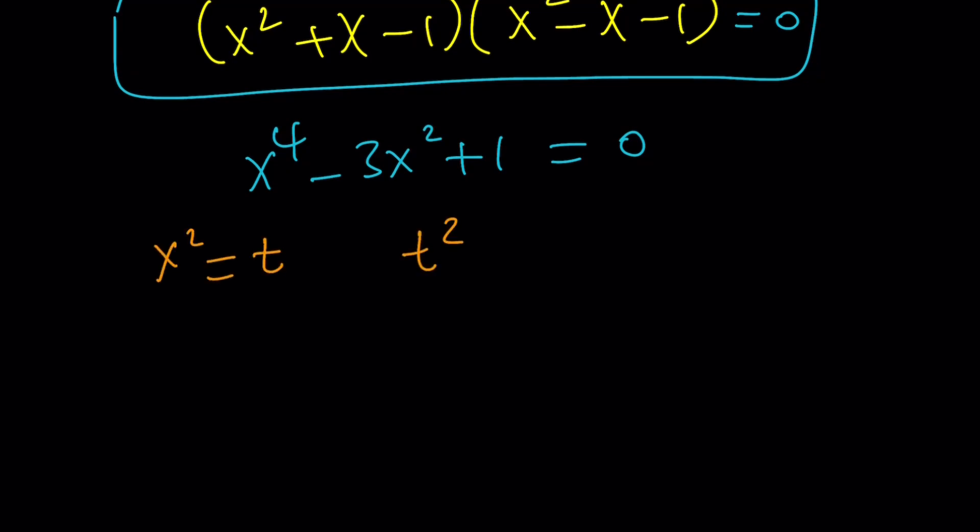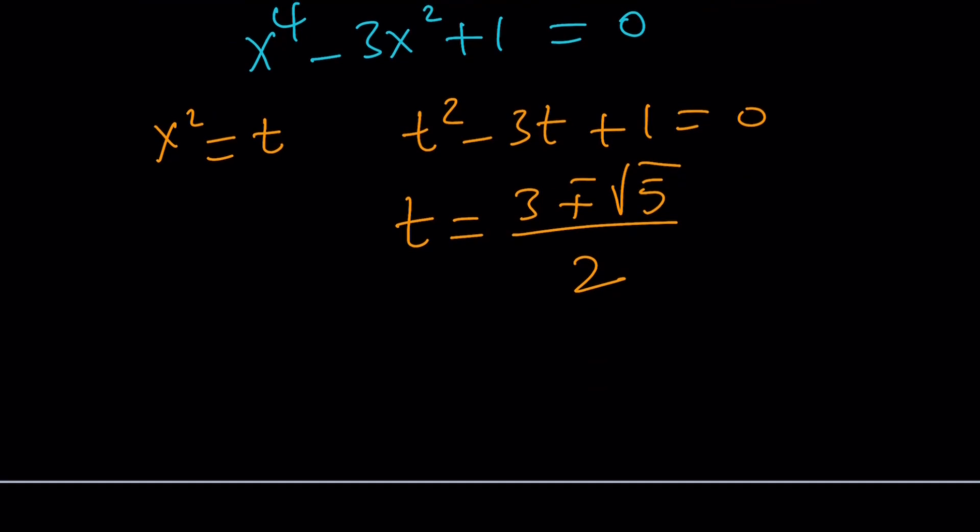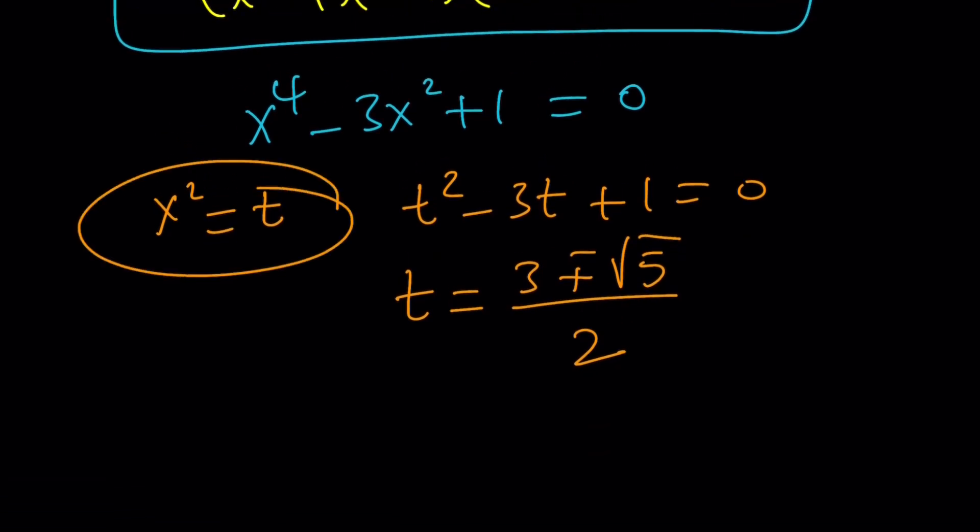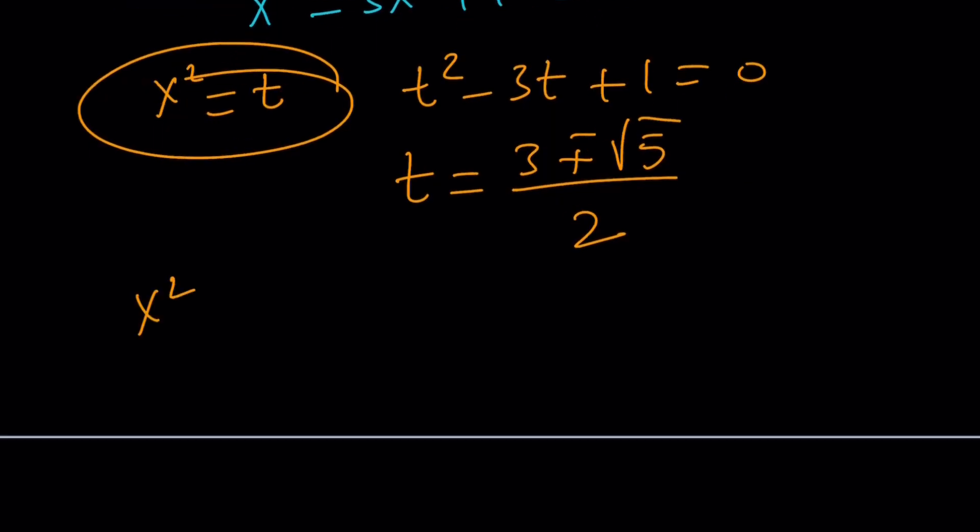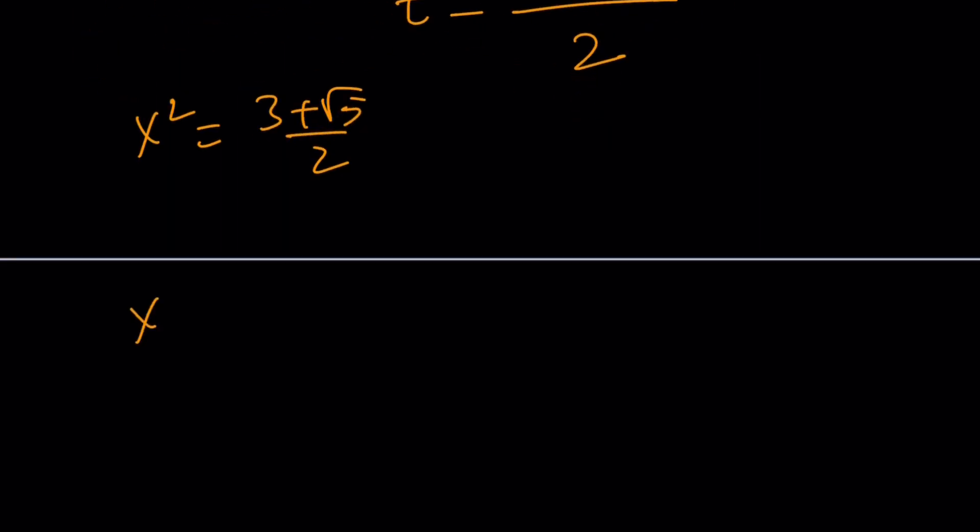So, you can go ahead and solve this problem by still setting x squared equal to t, t squared minus 3t plus 1 equals 0, and by the quadratic formula, t equals negative b plus minus 2 squared of 9 minus 4, which is 5, divided by 2. And, of course, t is x squared, so let's go ahead and set x squared equal to this, and this, and then solve for x.